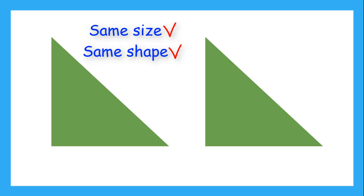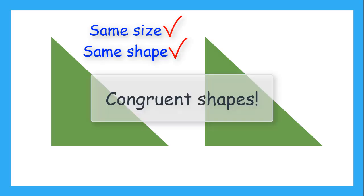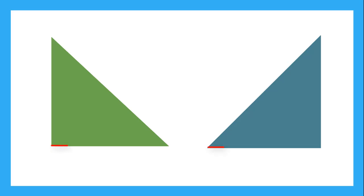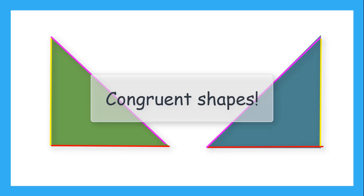Looking at these two triangles, they are the same in every way — these two triangles are congruent. What about these two triangles? Are they congruent? Even though the triangles are oriented differently, we can still find that each line segment on the green triangle has a matching line segment on the blue triangle. So yes, these are congruent.